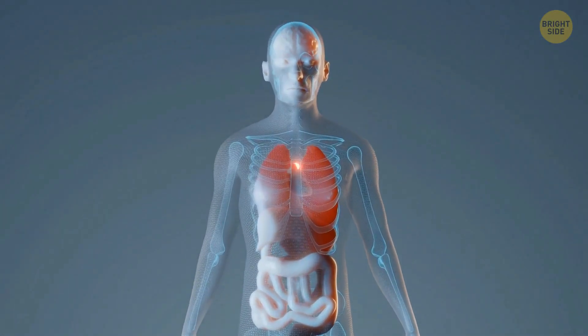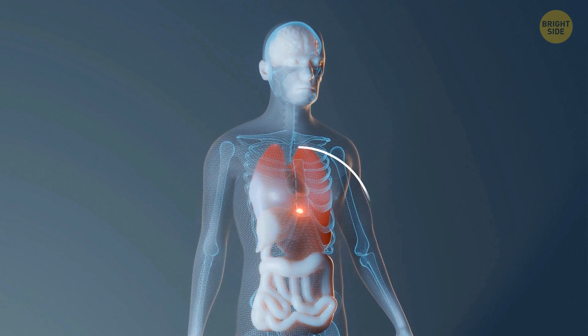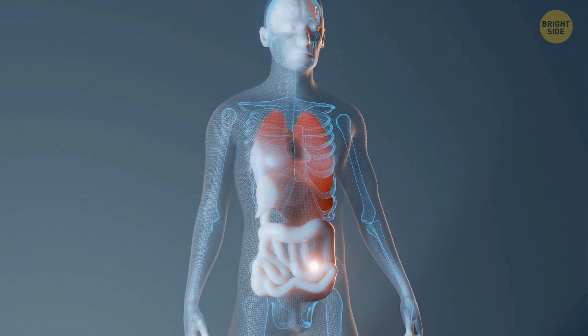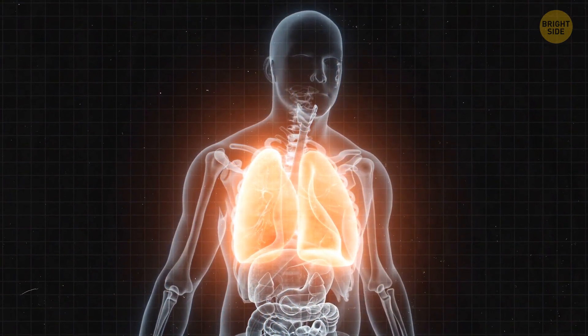When you take in air, it requires the effort of an entire team. Your brain's command center sends signals down to your diaphragm, telling it to flatten out. Your ribs and abdominal muscles adjust to allow your chest to expand, pulling the air into your lungs.